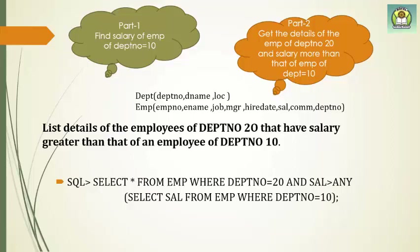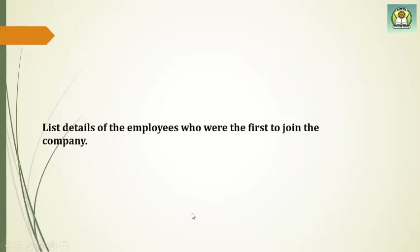The salary must be greater than any employee's salary from department 10, so we use the clause ANY. Next example: list details of employees who were the first to join the company. Here there is only one table involved. It is not compulsory that a subquery works across two tables — the condition may depend on another query from the same table, so we use a subquery.